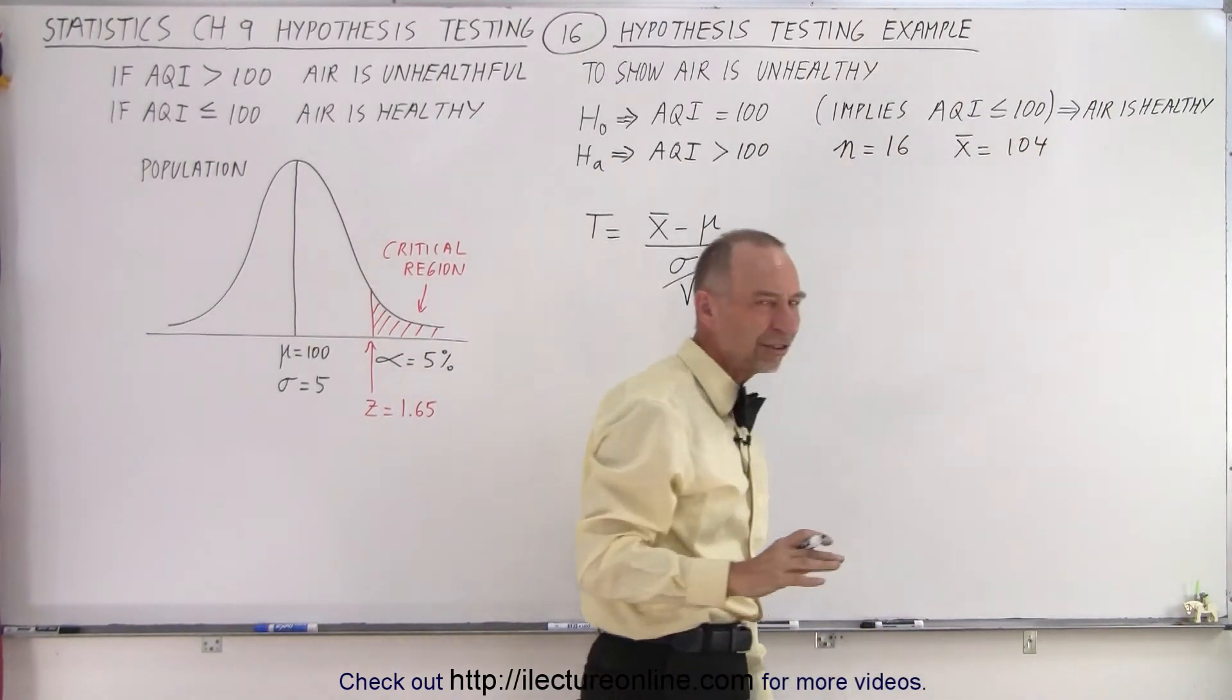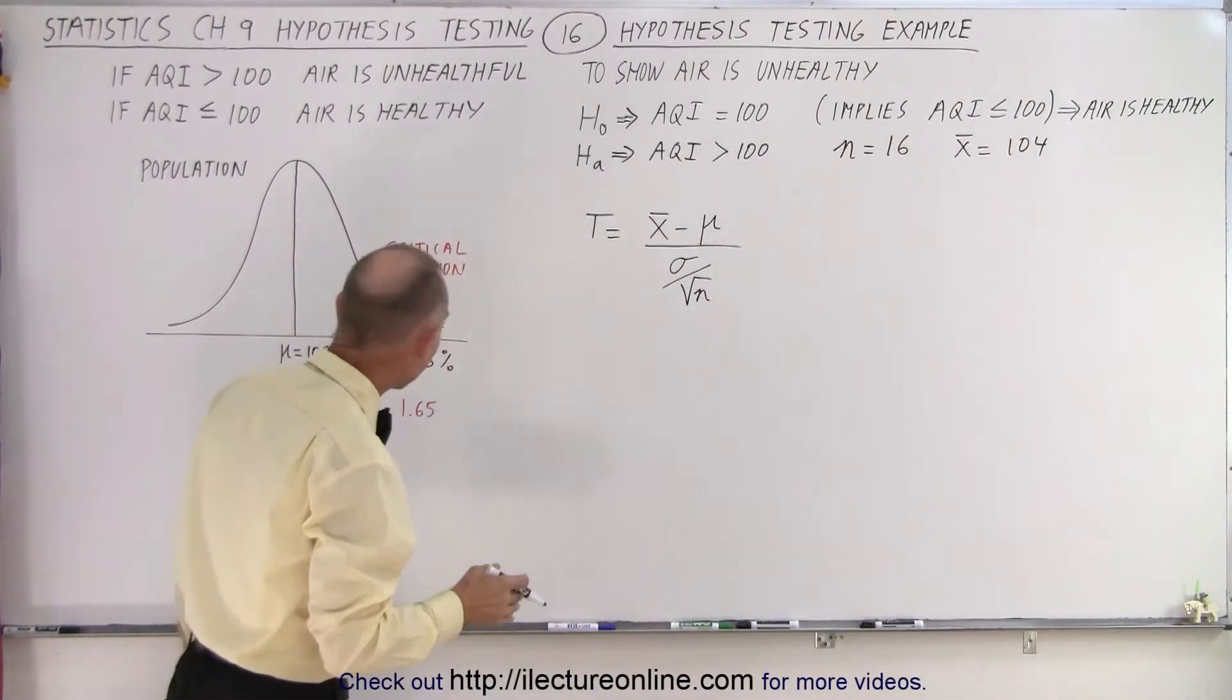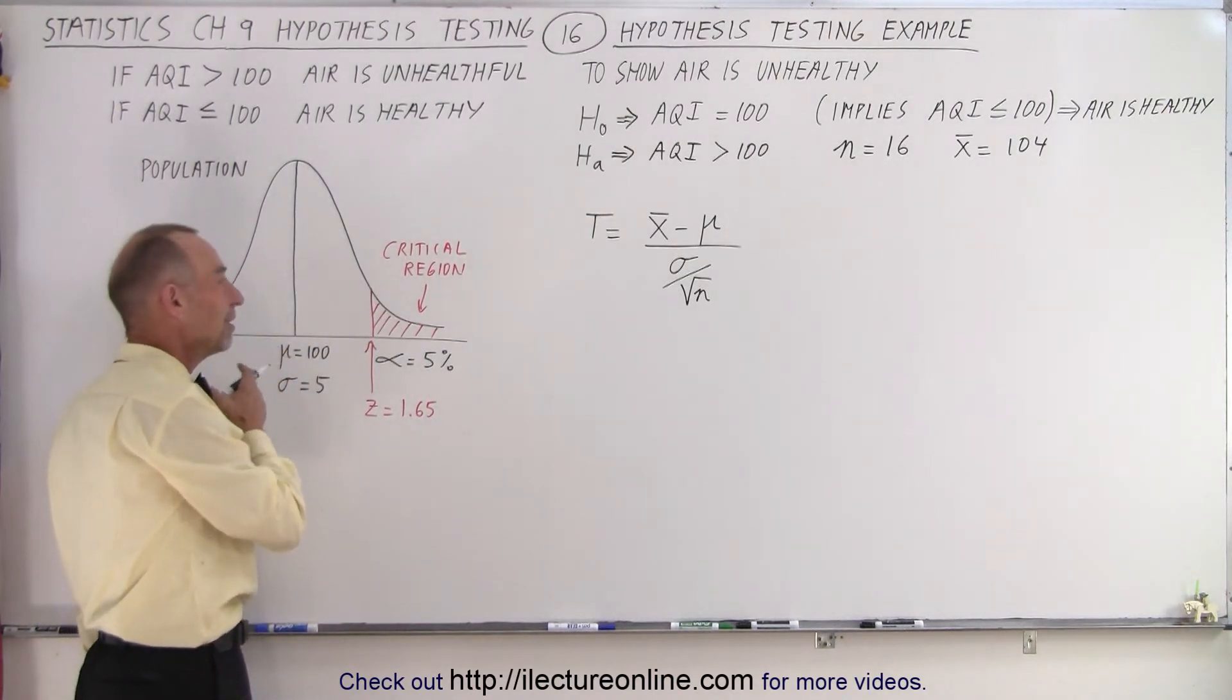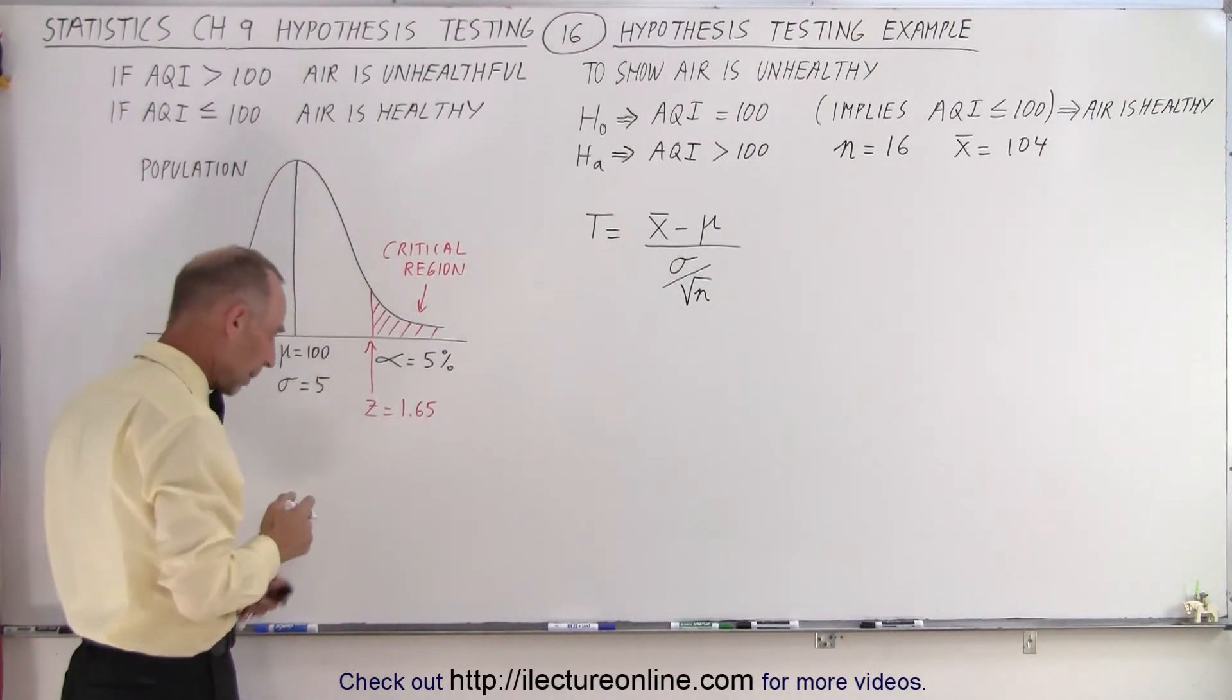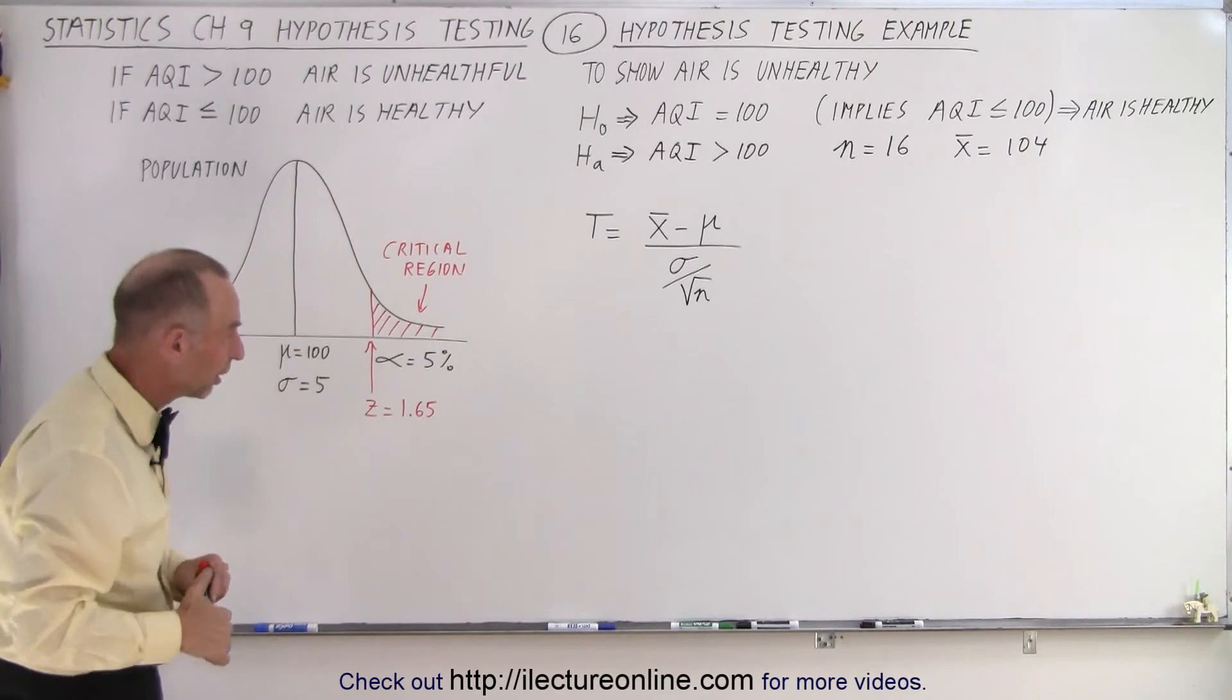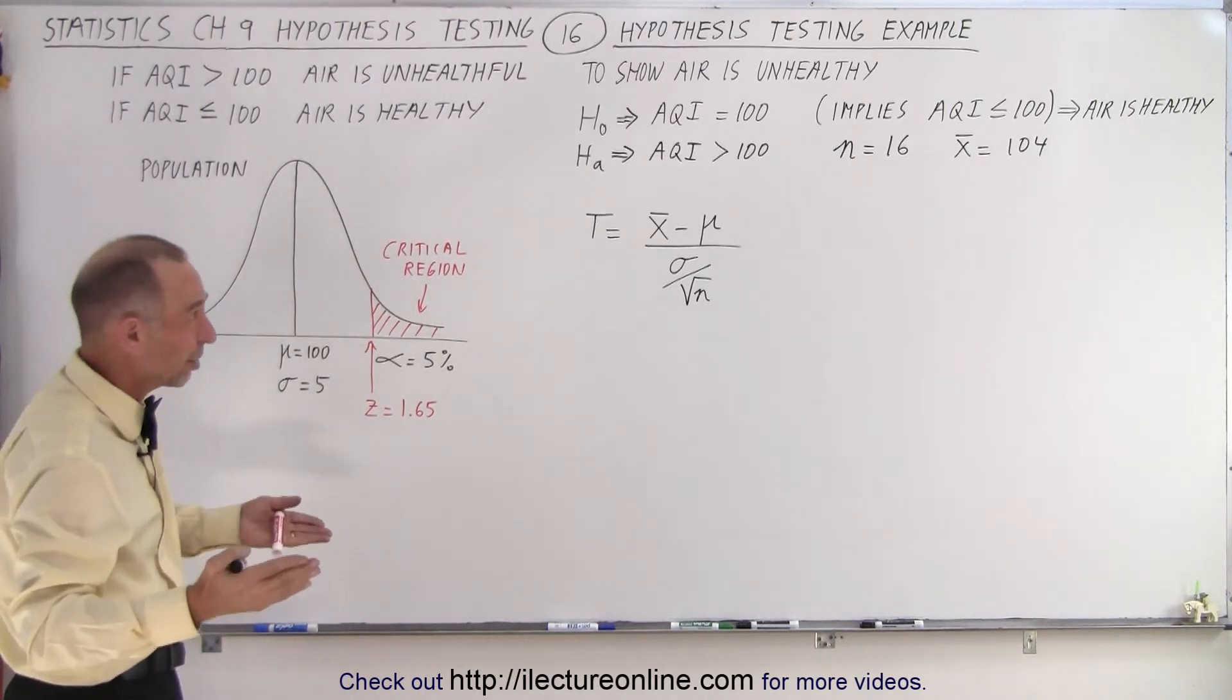So is that sufficiently large to indicate that, yes, the mean of the population is indeed larger than 100? What we're trying to do here is reject the null hypothesis, and is that sufficiently large to reject the null hypothesis? So let's find out.